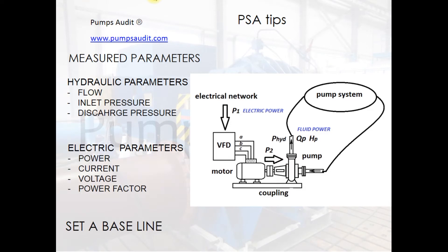To calculate overall efficiency, we need to measure hydraulic parameters and electric parameters. The more information we get about the pumping system, the more reliable analysis we can do and the more effective energy saving measures we can implement. Setting a baseline means that the current situation should be recorded and used for comparison with the upgraded system.